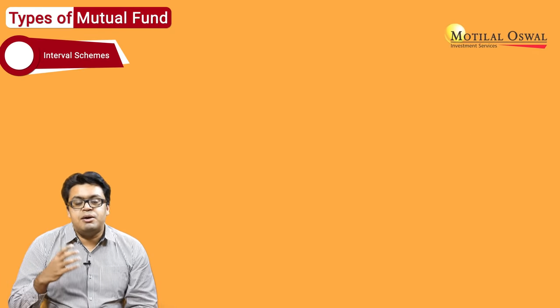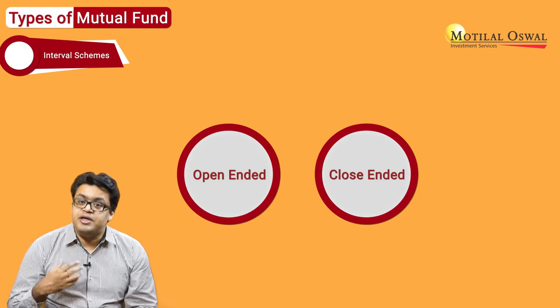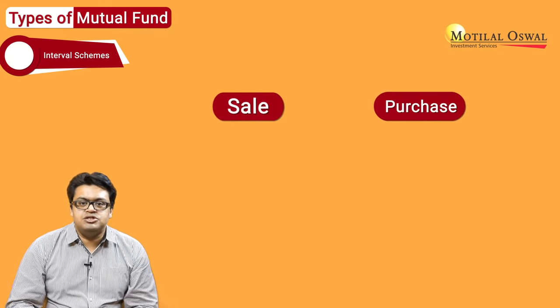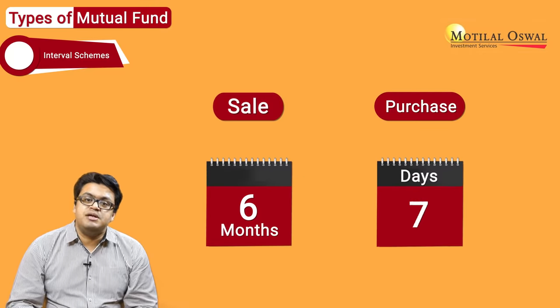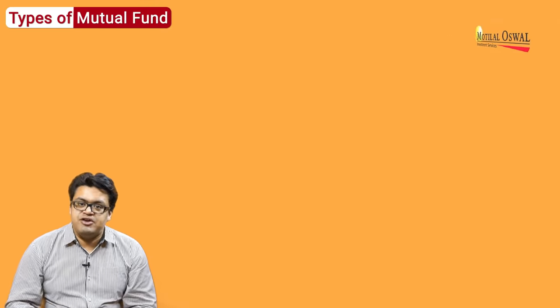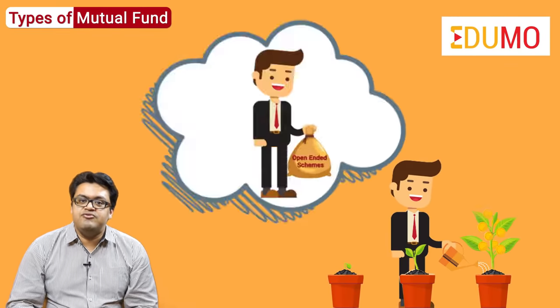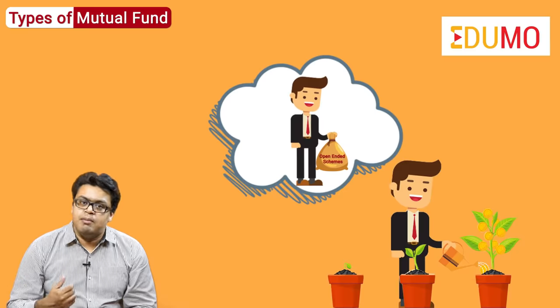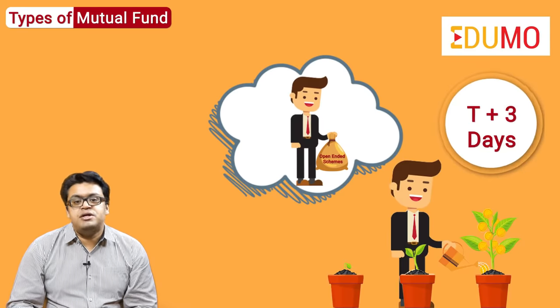Interval schemes are those which combine the characteristics of both open-ended and close-ended schemes. They remain open for sale and purchase once in six months or so for a period of approximately 14 days. It is generally recommended to invest in open-ended schemes since the investor can redeem whenever he wishes to. The amount is credited to the account of the investor after T plus three days. So an open-ended scheme is one of the most liquid assets which help in creating wealth for the long term.